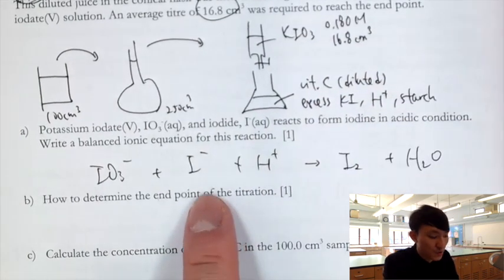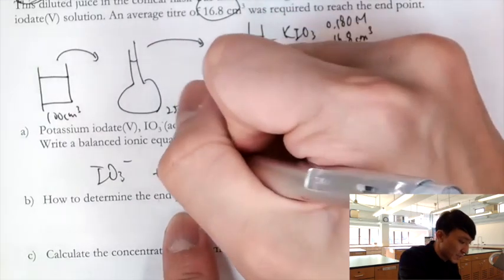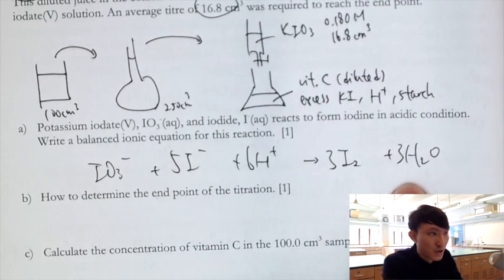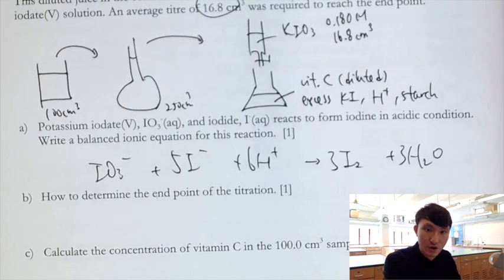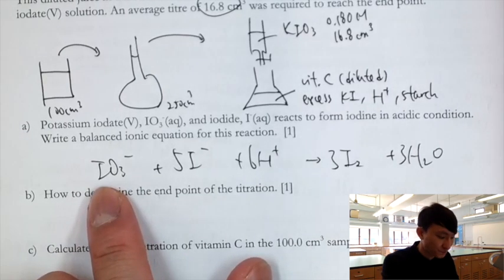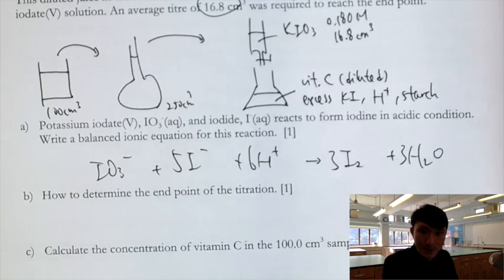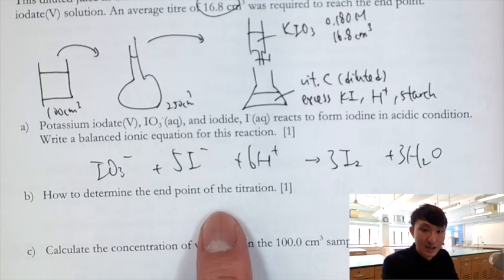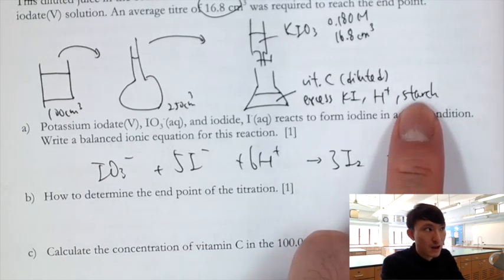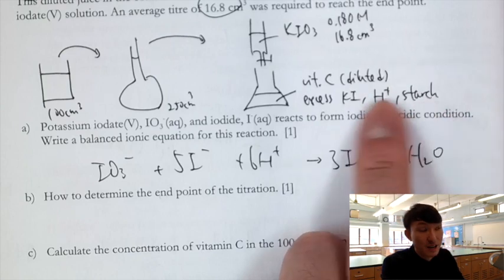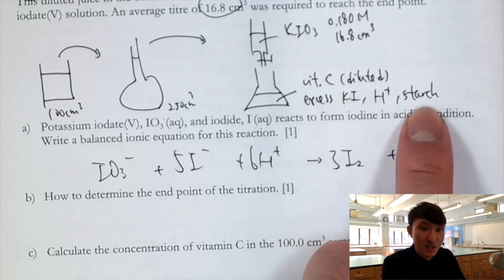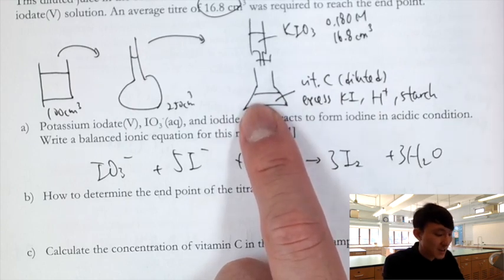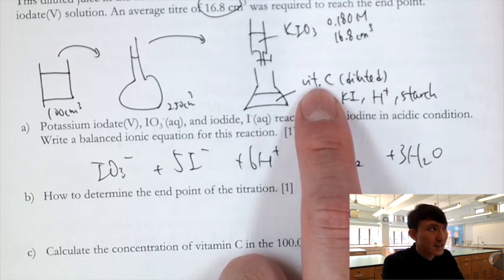The lemon juice was diluted from 100 cm³ to 250 cm³ — a 2.5× dilution. So the moles of vitamin C in the original juice = diluted moles × 2.5. The concentration of C6H8O6 = undiluted moles ÷ (100/1000 dm³) = 0.227 mol/dm³.